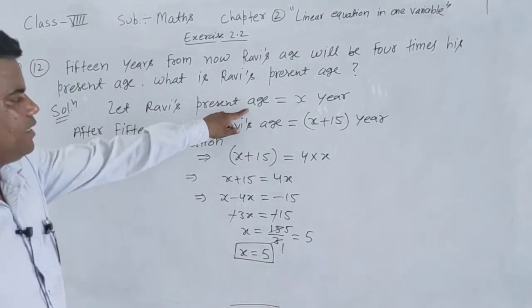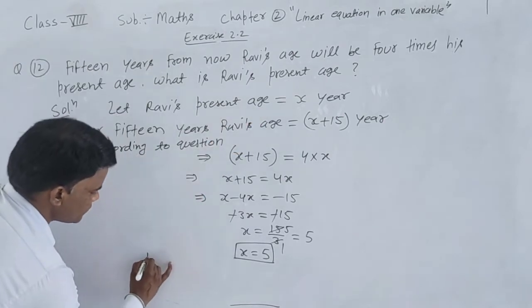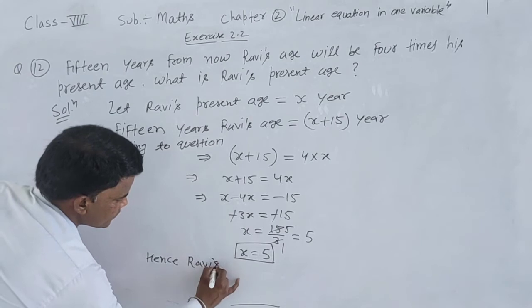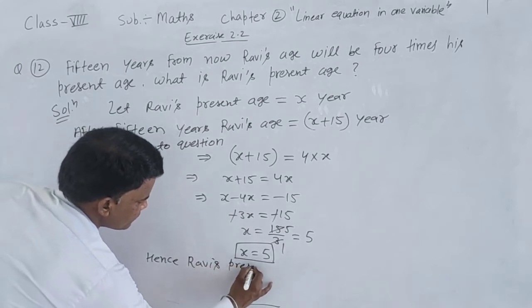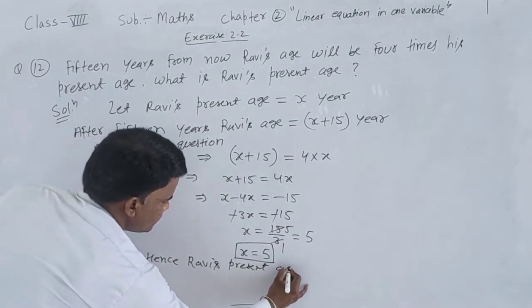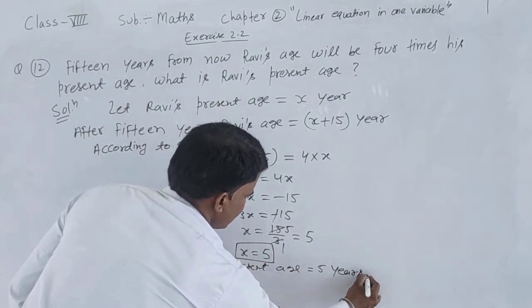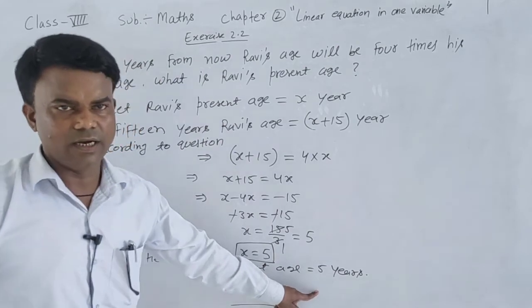Ravi's present age. Hence, Ravi's present age equal to 5 years. Ravi's present age equal to 5 years. Answer.